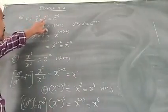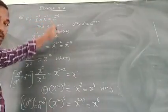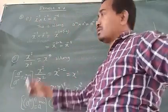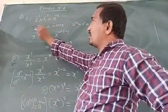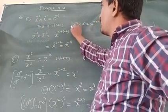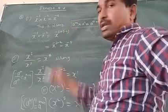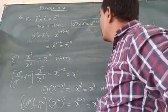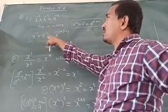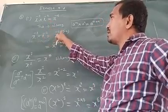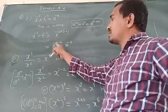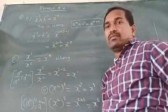x power minus 3 into x power minus 2 equals x power minus 6. Is it correct? No, it is wrong. What is the exponential property? a power m into a power n equals a power m plus n. So x power minus 3 into x power minus 2 equals x power minus 3 plus minus 2. That is x power minus 5.